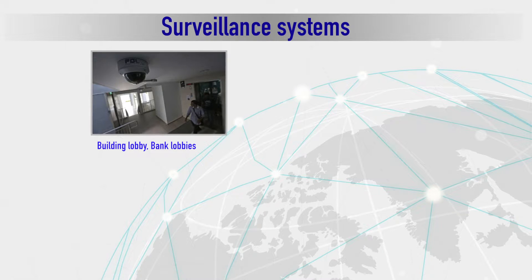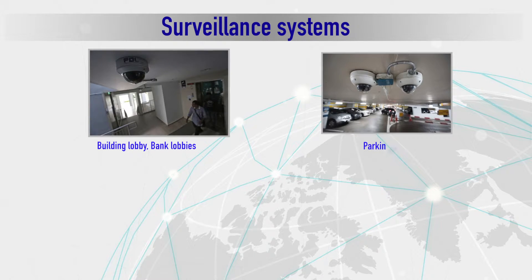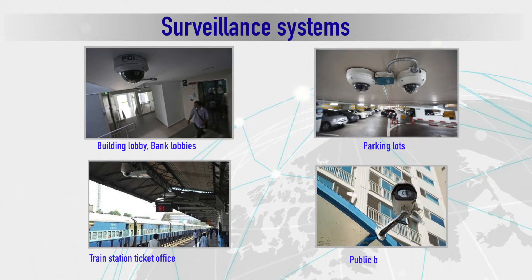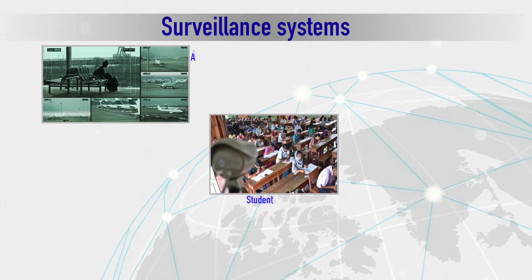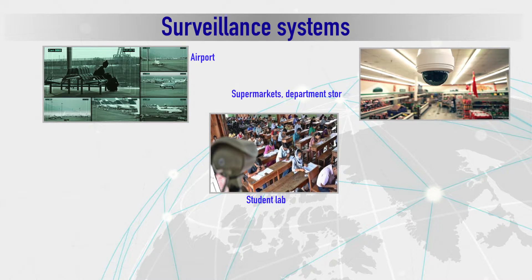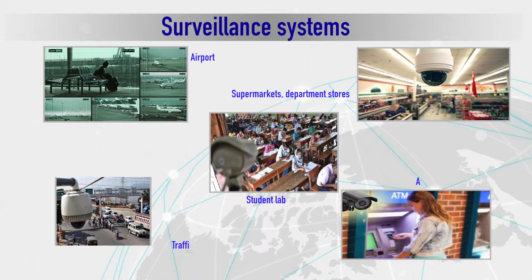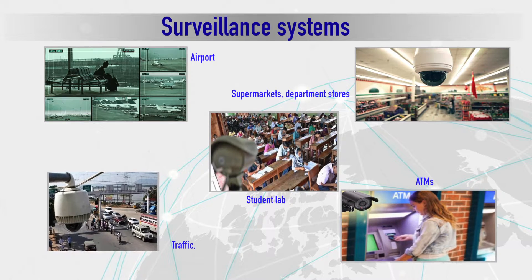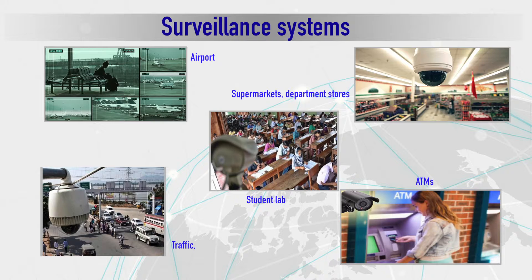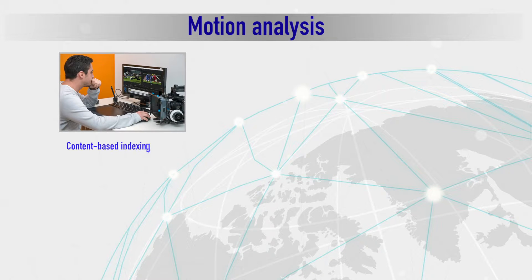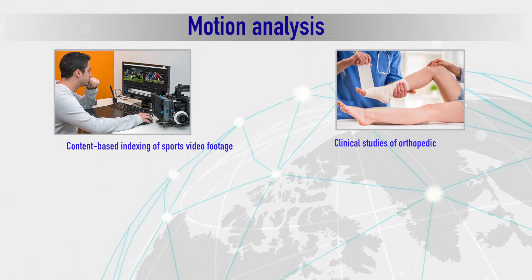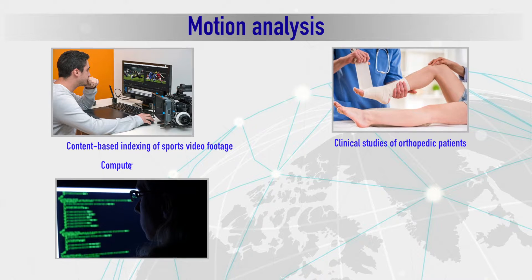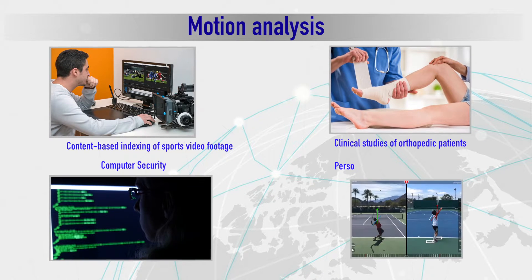Next, under surveillance systems: building lobbies, bank lobbies, parking lots, train stations, ticket offices, public building entry areas, student laboratories, airports, supermarkets, department stores, traffic, and ATMs are all places where behavior analysis has scope. Next comes motion analysis with content-based indexing of sports video footage and clinical studies of orthopedic patients.